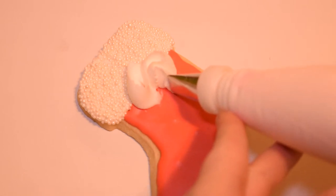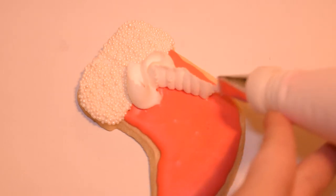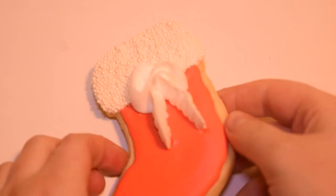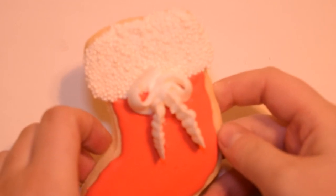I then pipe on the ribbons making a squiggly motion. Allow the royal icing on your cookies to fully dry, and then they're done.